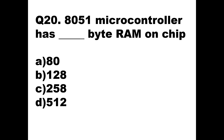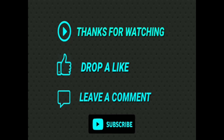Question number nineteen: the 8051 microcontroller has dash byte RAM on chip. One of the key features of the 8051 microcontroller is 128-byte on-chip RAM. So option B, 128 byte, is the answer. I have covered the first 20 questions of the electronics section from the DCET October 2020 question paper. In my next video I will take the next 20 questions of the same paper. Thank you, students.